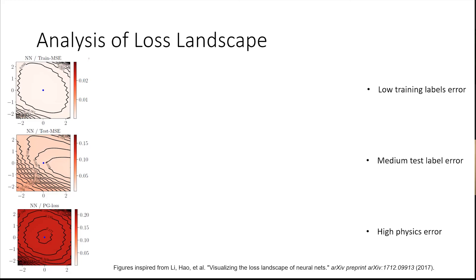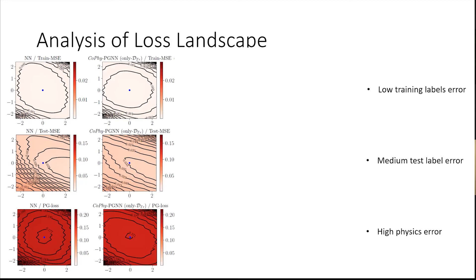What happens when we do CoPhy-PGNN with only the training data? We get really the same result. Using only the trained data, the training MSE is really low, test MSE not so much, and PG loss is really high. Now what happens if we do the opposite? When we're using the physics constraint without taking into account the MSE of the training data, then both the training MSE and the test MSE are really high even though the PG loss is low.